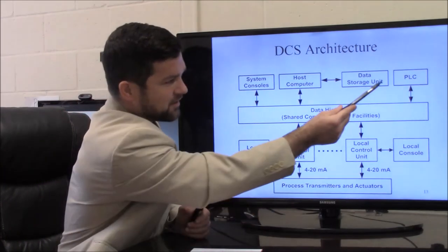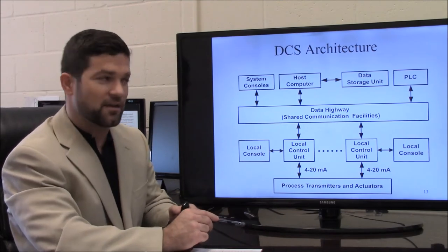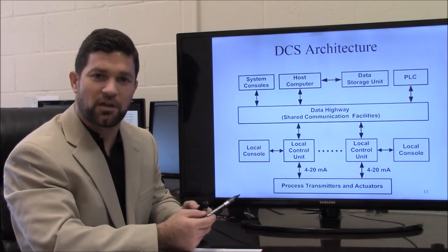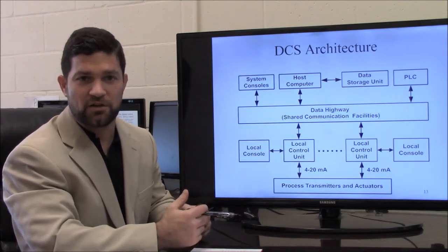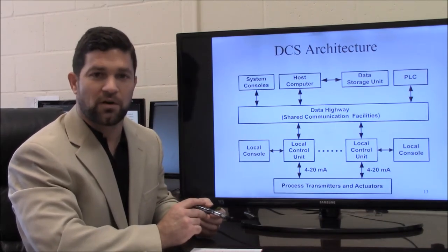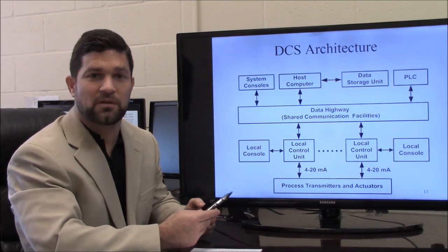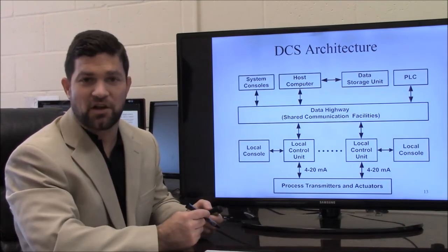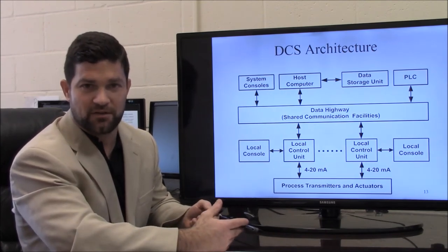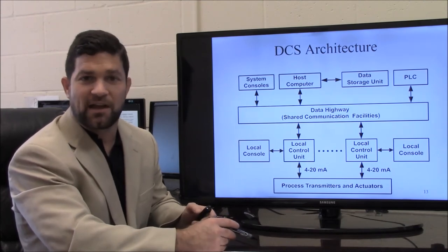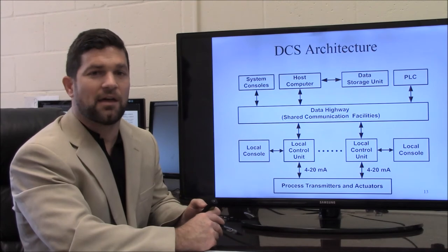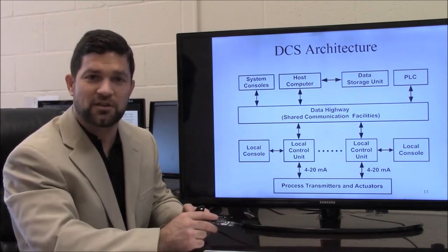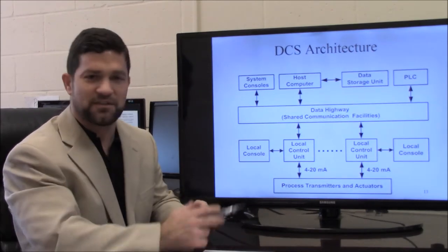One important thing to note on this slide is in the upper right-hand corner there's what's called a PLC — a programmable logic controller. These are controllers that use ladder logic, which is useful for things such as reactor startup, reactor shutdown, batch operation, and any sort of startup sequence. Ladder logic systems go through a series of logic commands, such as: fill the reactor until it reaches a target level, add steam until it reaches a target temperature, add reactant component one until a certain outcome is achieved. These programmable logic controllers can be integrated with DCS systems fairly seamlessly.